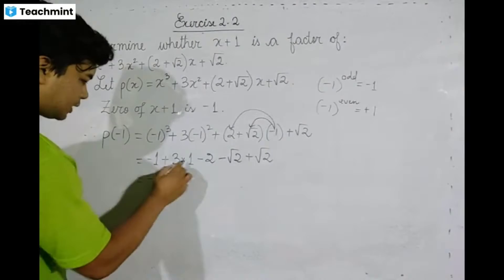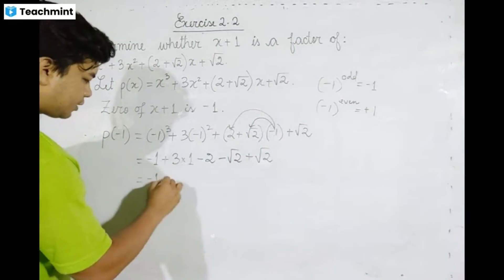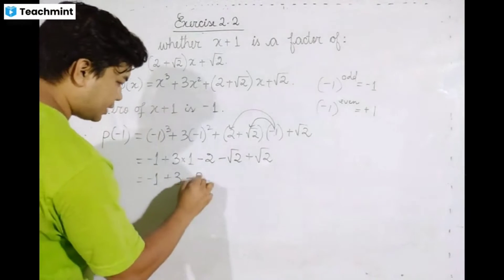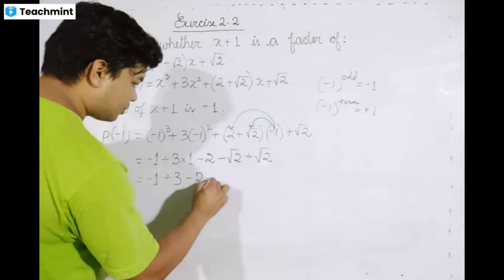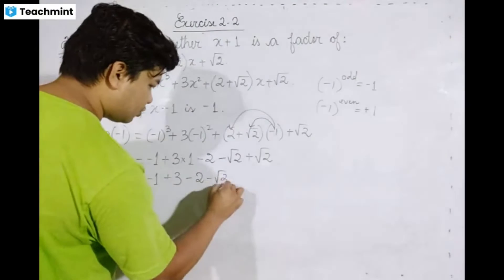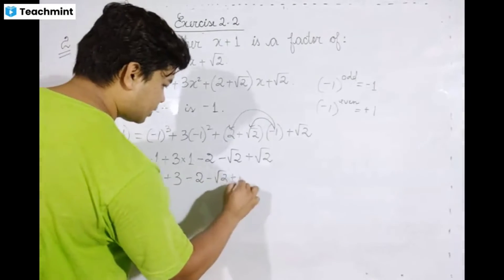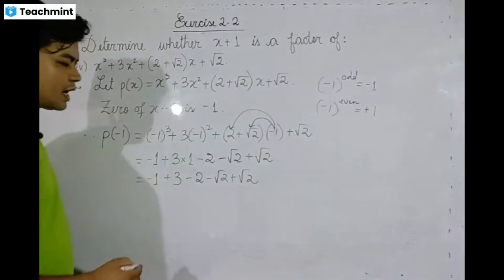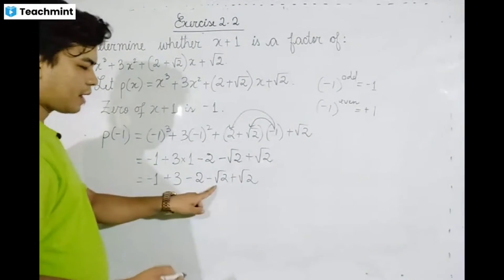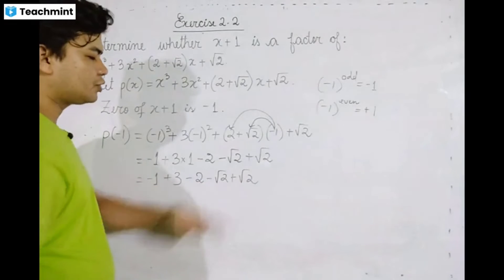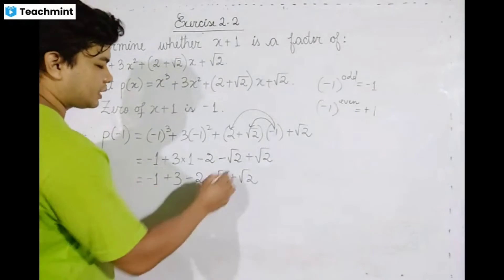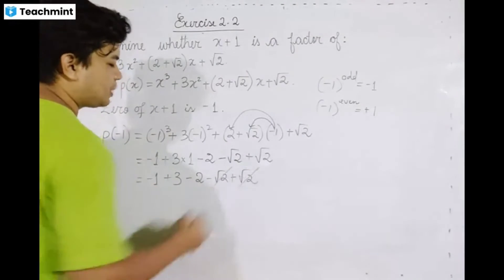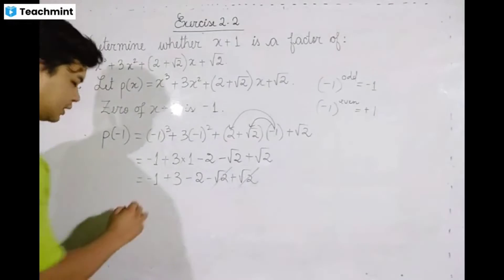Minus 1, plus 3, minus 2 minus root 2 plus root 2. So minus root 2 and plus root 2 cancel each other out.